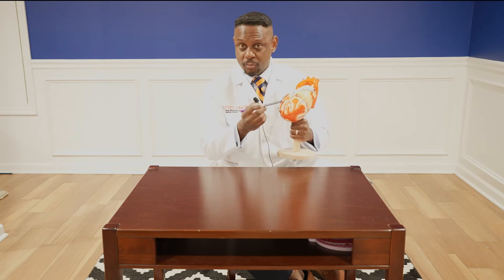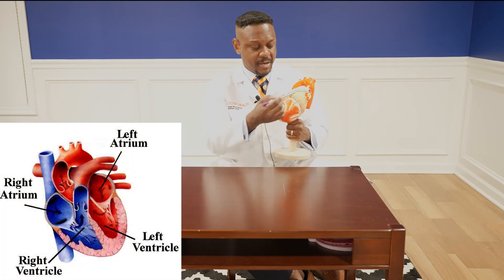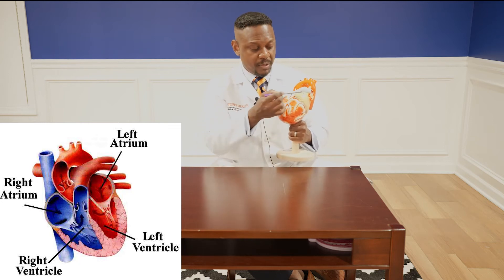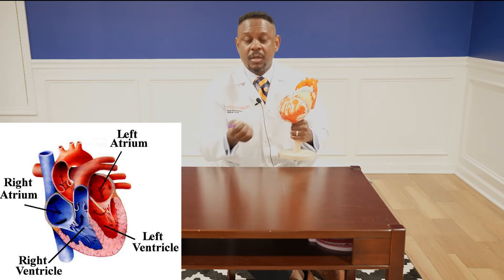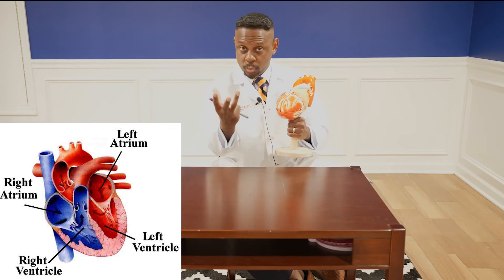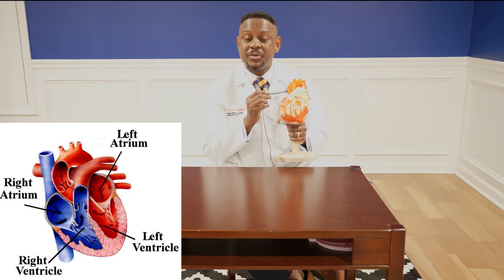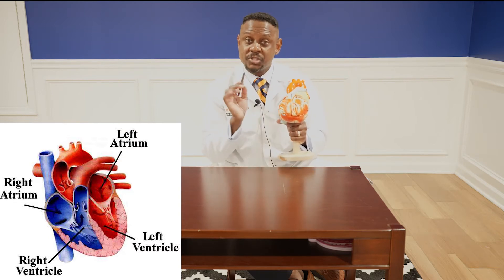This is a model of a heart. I like to think of the heart in terms of sides. This is the right side — right atrium, right ventricle — and this is the left side — left atrium, left ventricle. Blood will classically go from the left atrium to the left ventricle. The ventricle will squeeze and push blood to this structure, referred to as the aorta — the largest blood vessel in the body.